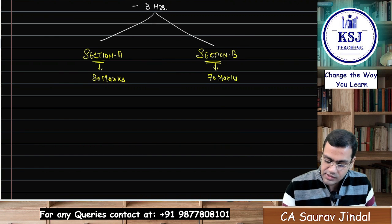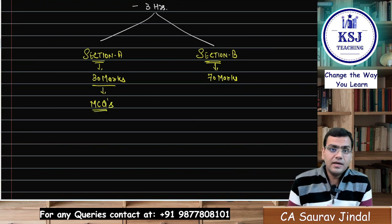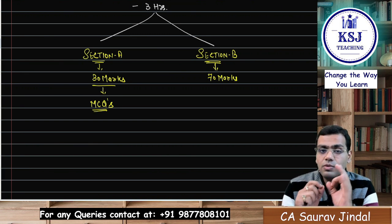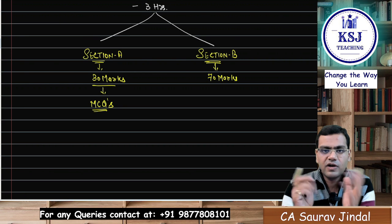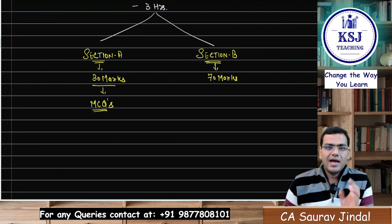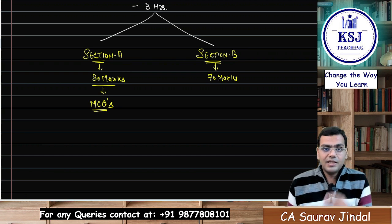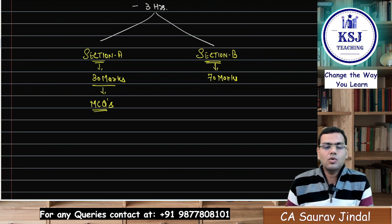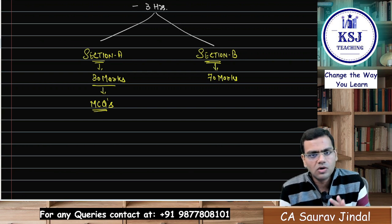Under Section A, in these 30 marks you will get MCQs. What type of MCQs can be there? One type is case scenario based — in the paper of cost accounting, that means you will be given a practical problem. For example, it's a cost sheet problem and they will ask you: what will be the prime cost, what will be the cost of production, what will be the cost of sale? There will be four options, one mark each, no negative marking. A direct MCQ can also be asked on any of the concepts, be it a theory concept or anything.